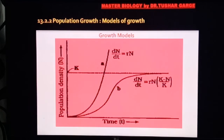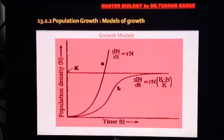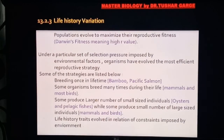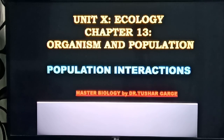Comparing the two models: logistic growth is influenced by carrying capacity — the curve levels off when carrying capacity is reached, forming a sigmoid (S-shaped) curve, which is more realistic. Both J-shaped (exponential) growth and S-shaped (logistic/sigmoid) growth can be calculated and assessed using their respective parameters. The next lecture will cover population interactions. Thank you.